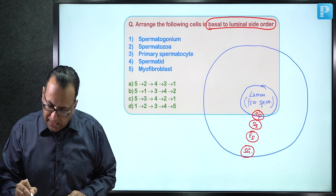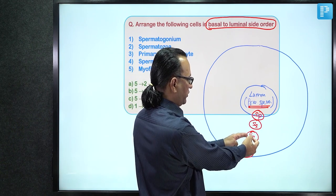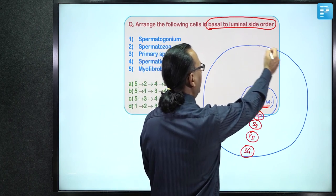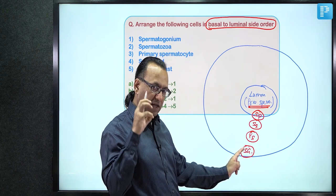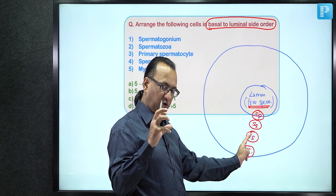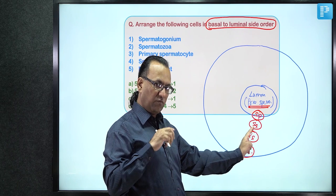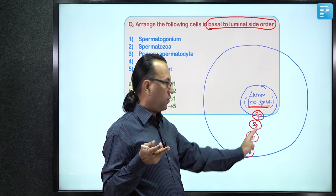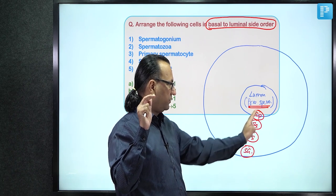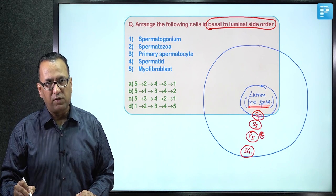To identify these cells: spermatogonium is near the basement membrane toward the periphery. The primary spermatocyte has clumped chromatin, which is not seen in spermatogonium. Secondary spermatocytes are mostly not evident histologically. Spermatids are smaller cells with a round nucleus and less evident chromatin. The largest cell in this sequence is the primary spermatocyte.